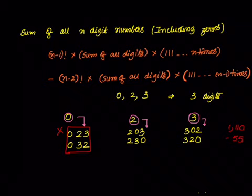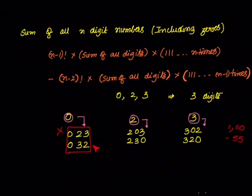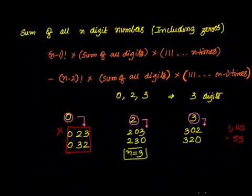Now how do we get those numbers to subtract? If we remove the 0, we are left with digits 2 and 3. All 2-digit numbers formed with 2 and 3 are: 23 and 32. So 23 + 32 = 55 is exactly what we subtract. This is nothing but applying the earlier formula but now for 2 digit numbers — making it (n-2) factorial.